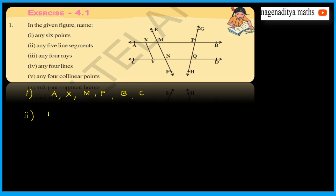The five line segments are: MP, PB, XM, NQ, and QD. So these are the five line segments.